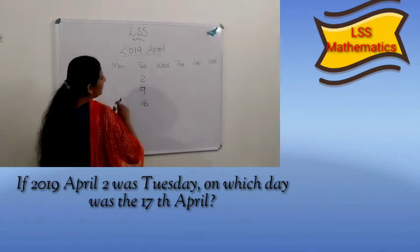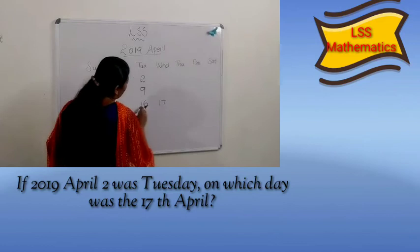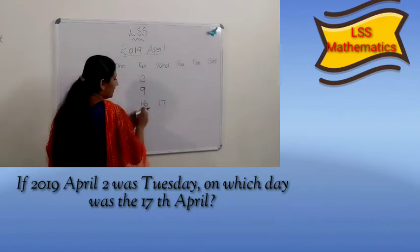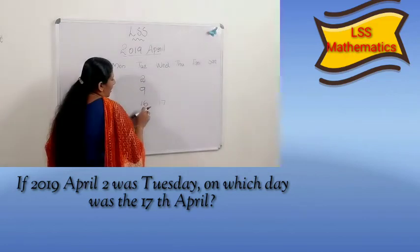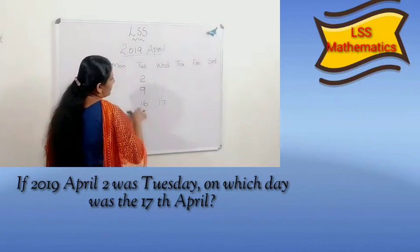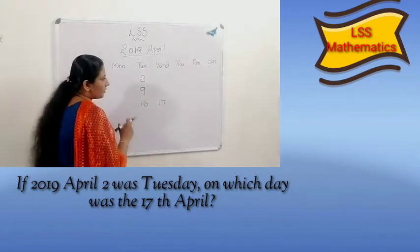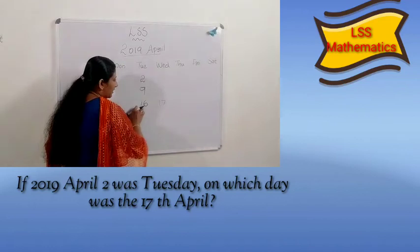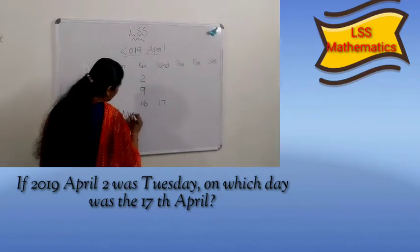Okay. The question is about the 17th — which day? Here 16 is Tuesday. 2, then 7 days gives 9, then 7 more days gives 16. So 16 is Tuesday, and 17 is the next day. The answer is Wednesday. So, the answer is Wednesday.